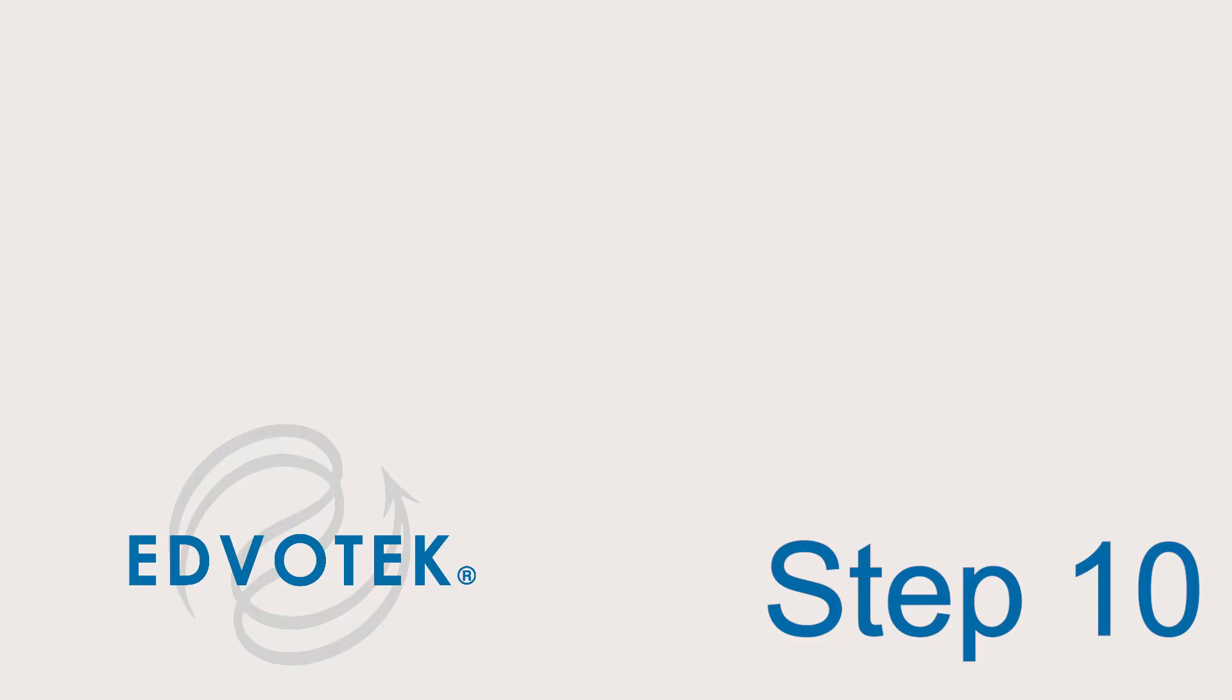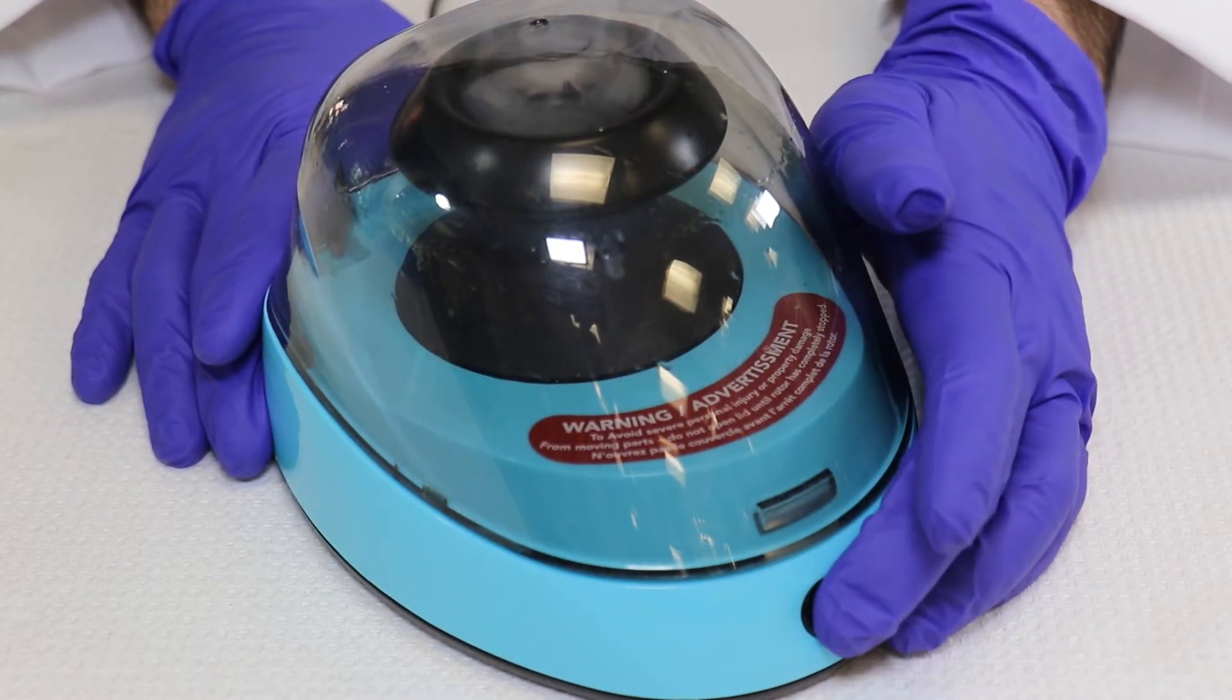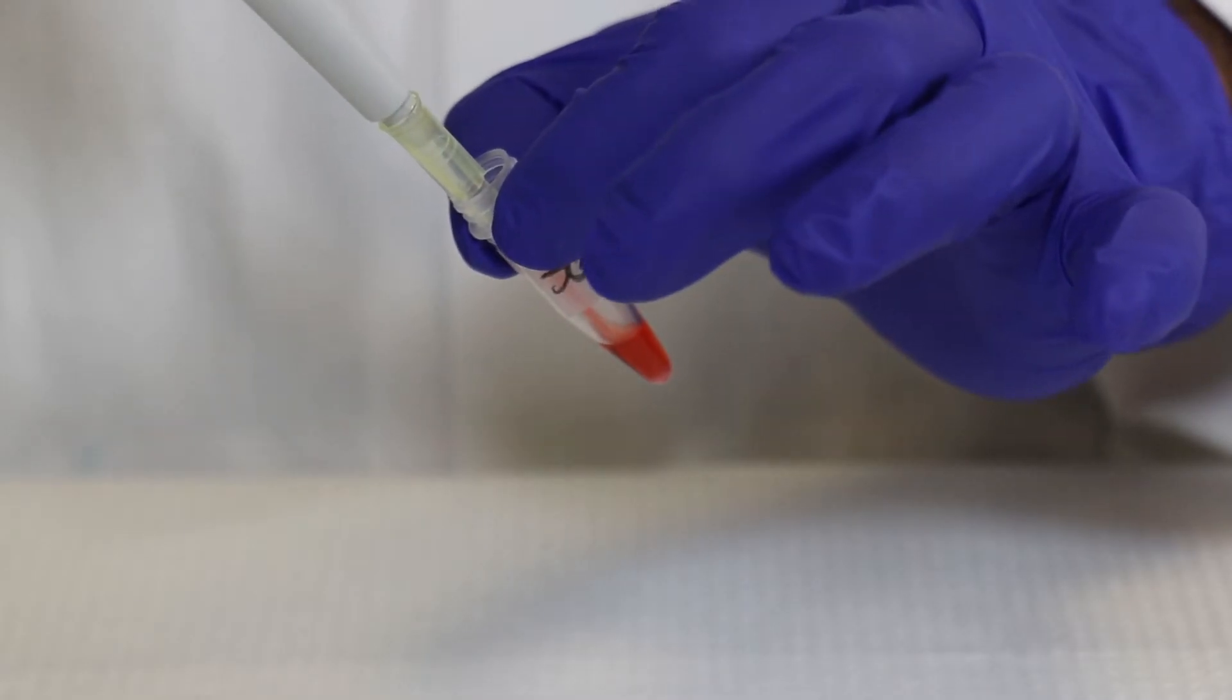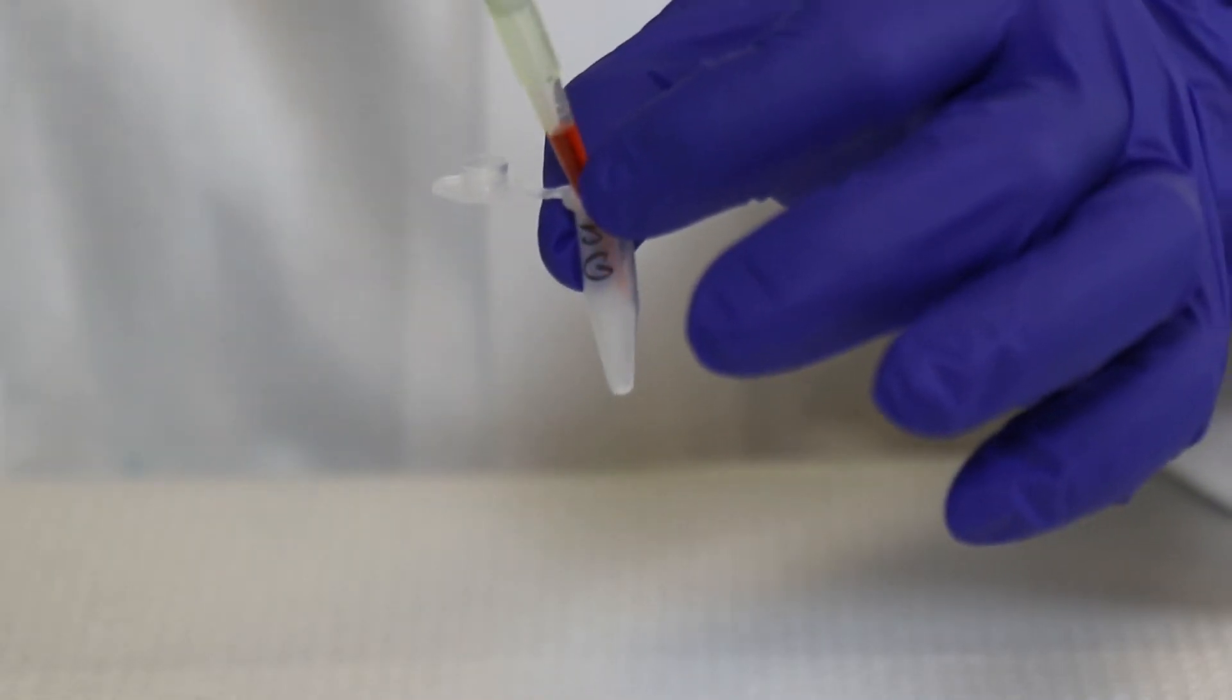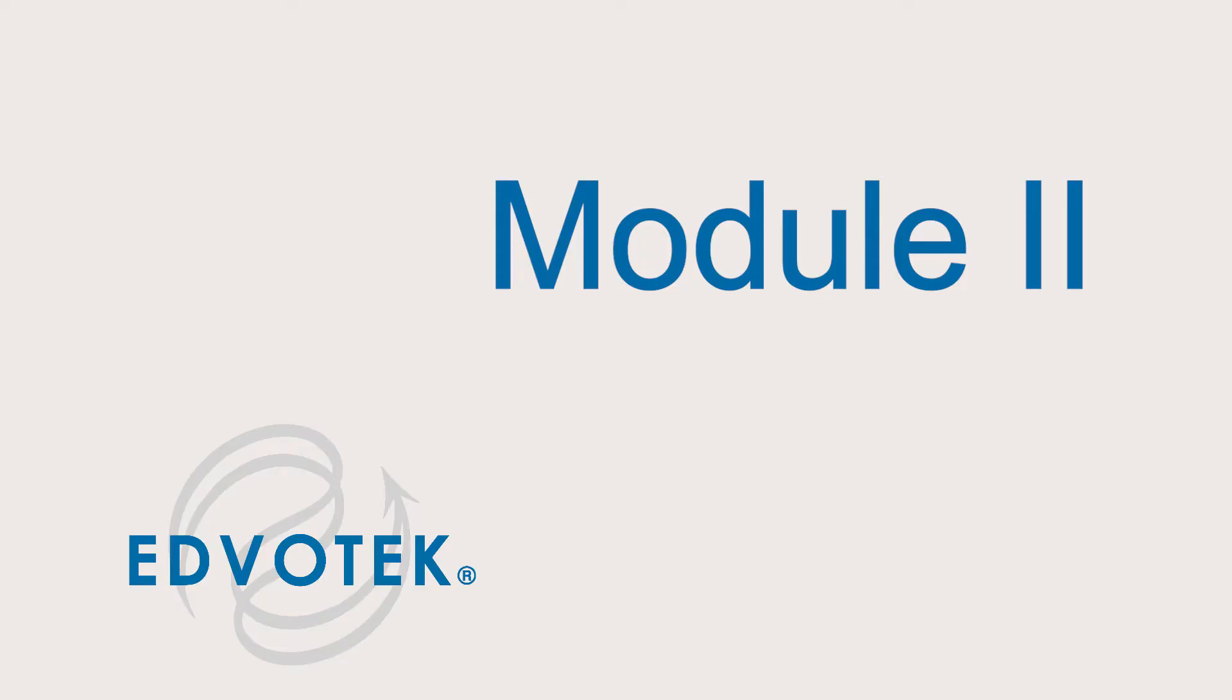Step 9: Incubate the sample in a 99 degrees Celsius water bath for 5 minutes. Step 10: Centrifuge the cellular lysate for 2 minutes at full speed. Step 11: Transfer 50 microliters of the supernatant to a clean labeled snap top microcentrifuge tube and place the tube on ice until needed.